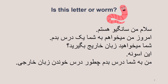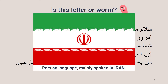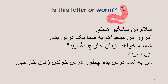Is this letter all warm? It is very curly, and it is formed from right to left. In fact, it is Persian language. Persian language is spoken mainly in Iran. These sentences are Persian — can you read this?